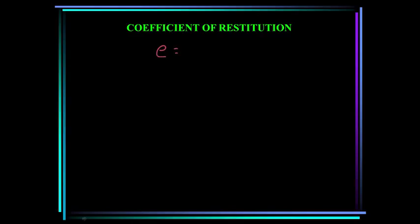The coefficient of restitution is the ratio of the particles' relative separation velocity after impact to the relative approach velocity before impact. Denoted by E, it equals the velocity of B after impact minus the velocity of A after impact, divided by the velocity of A before impact minus the velocity of B before impact. If E is specified, this gives us the second equation needed to solve the problem.